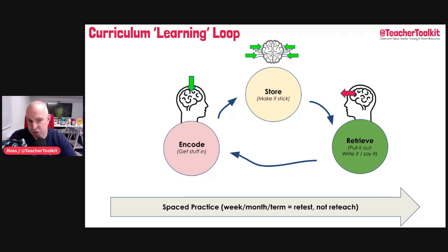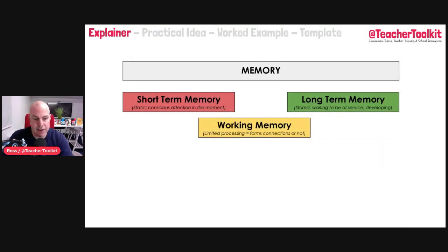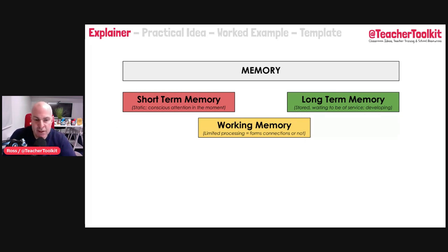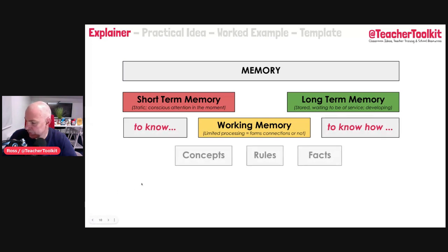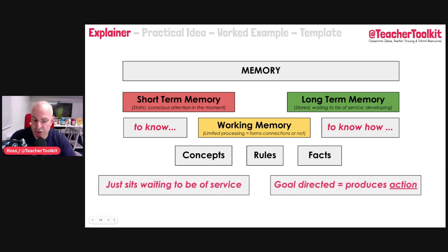Long-term memory concerns memories that are not conscious in the moment. What did you have for dinner last night? What was the colour of your first car? Not conscious attention — information that has been acquired and consolidated. It might last for a day, a week, a year, or forever over our life. Now let's push a little bit further: long-term memory can be divided into different categories — explicit and implicit.